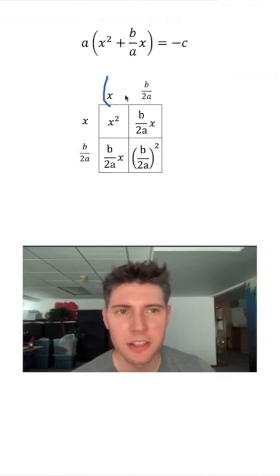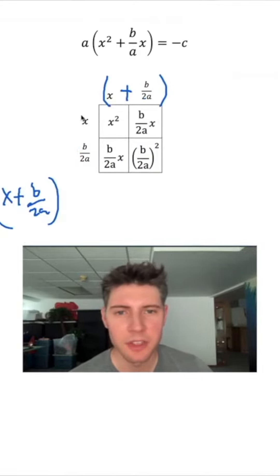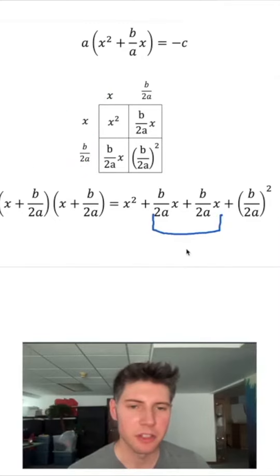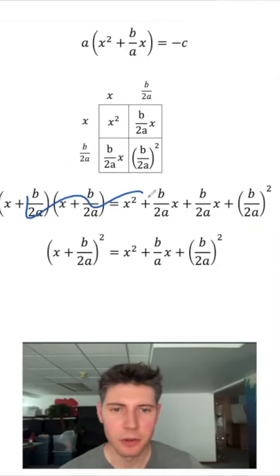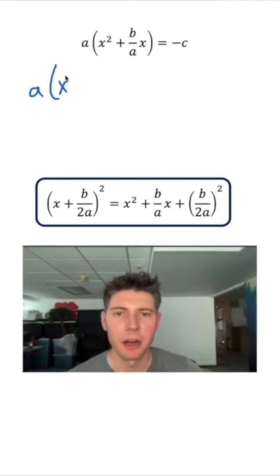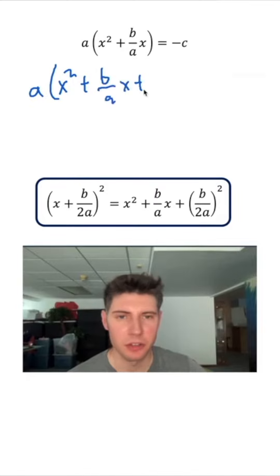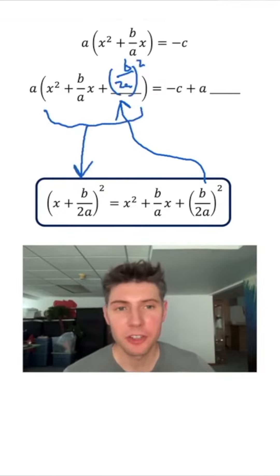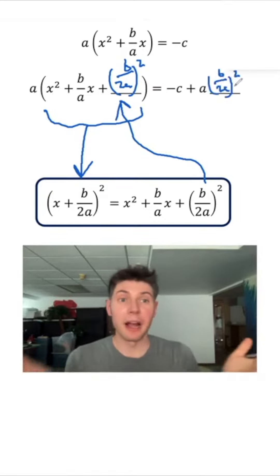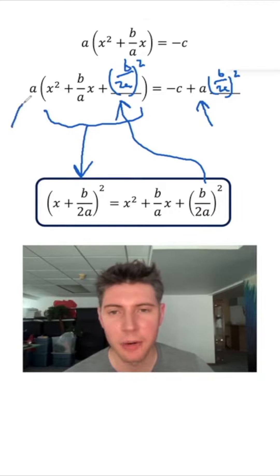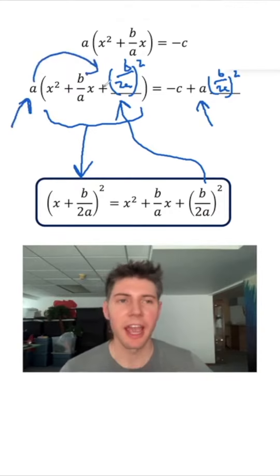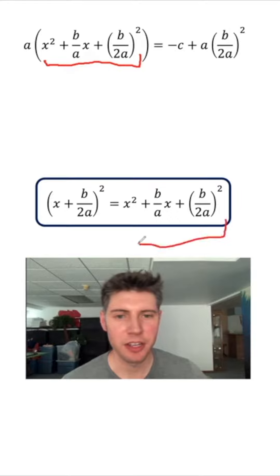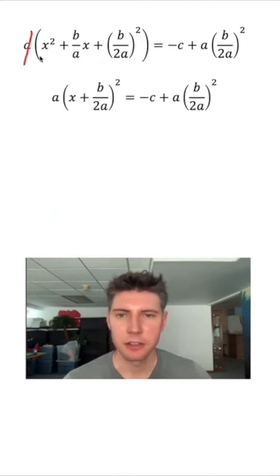This x plus b over 2a, times x plus b over 2a, equals the sum of all this stuff inside. These two can add up to become b over a times x. We don't need the rectangle anymore. We rewrite this down below with spaces to complete the square. Adding (b over 2a) squared here, we can change all of this into a perfect square. But before that, we also need to add (b over 2a) squared on the other side so things are balanced — and the reason there's an a here is because of the a being distributed. The inside now matches the formula, so we can substitute it in.